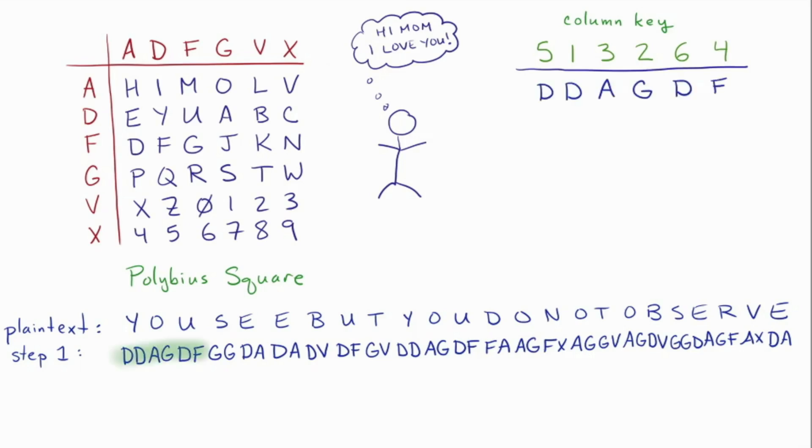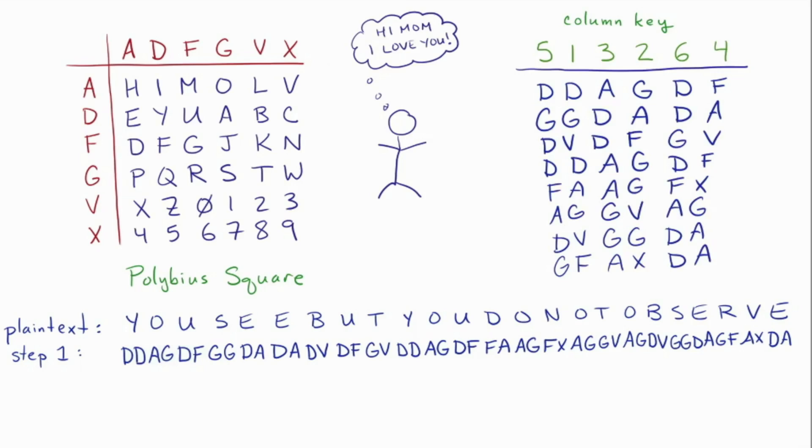What I'm going to do is I'm going to take the results of step one, and I'm going to write it under the column key from left to right, top to bottom. And then once I've got that, I've got six columns of letters here, because my column key was six columns long. It could be different columns; in practice in the war it was like 20, 24 columns. So now I've got the letters written out like this.